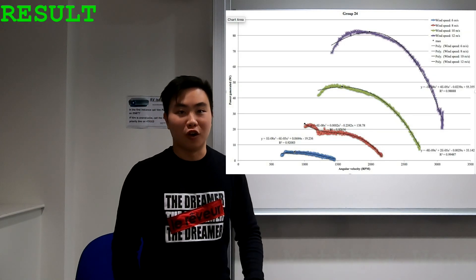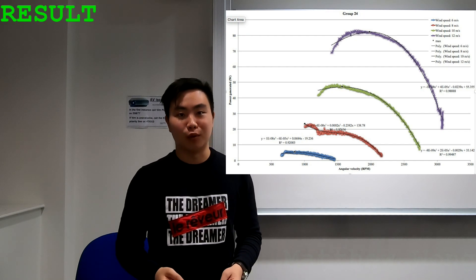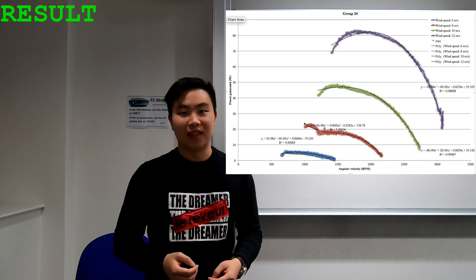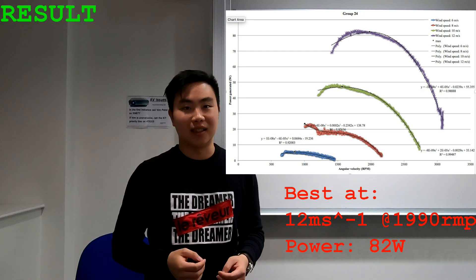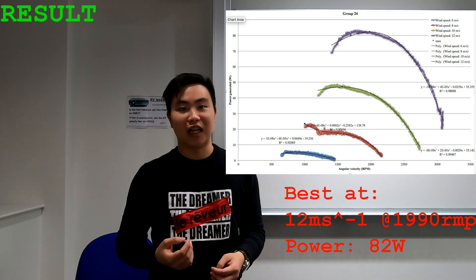Here's a graph that shows the performance of our turbine. As we can see, the power is increasing as the RPM is slowing down but eventually reaches a limit due to storm. The turbine is performing at its best at 12 meters a second wind speed producing a power of 82 watts at 1,990 RPM.